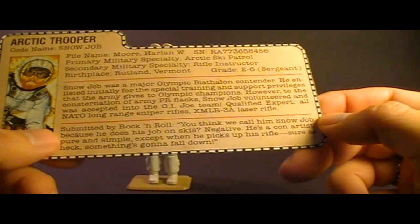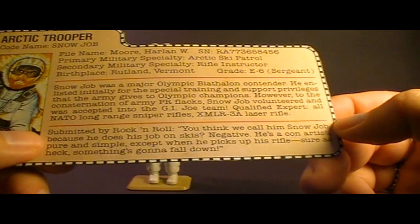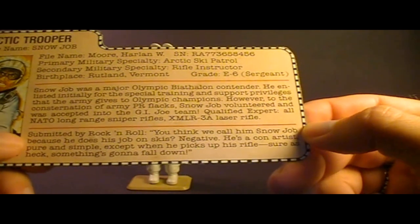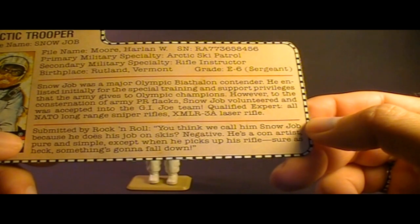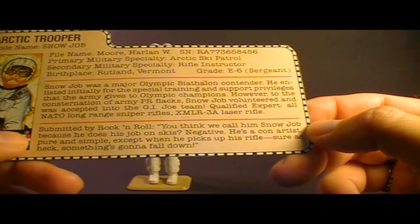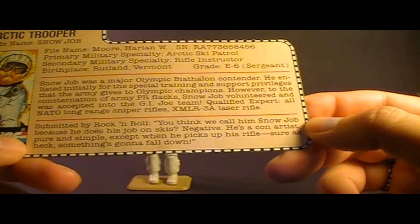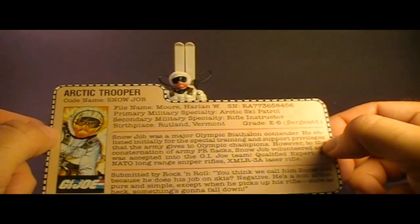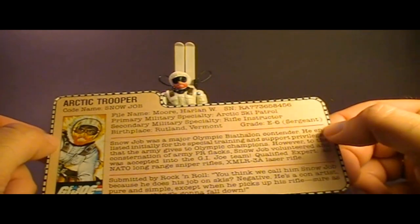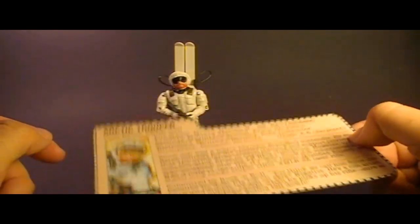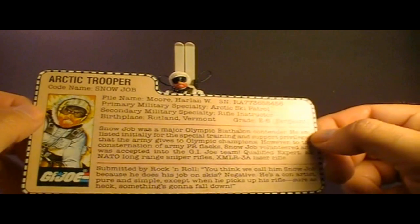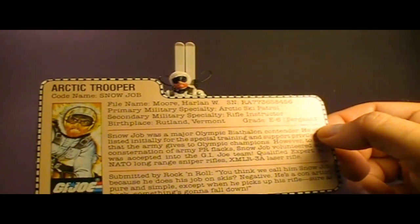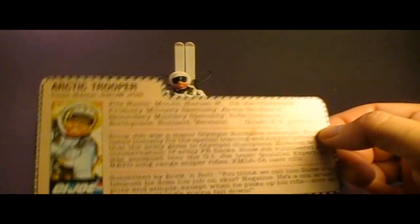There's a quote down here at the bottom of the card. It says, submitted by Rock and Roll. You think we call him Snowjob because he does his job on skis? Negative. He's a con artist, pure and simple. Except when he picks up his rifle. Sure as heck, something's gonna fall down. So the file card paints Snowjob as a con artist and a jock. And generally, not a very likable guy. The personality depicted in the file card came through in the comic books sometimes, but not a lot.